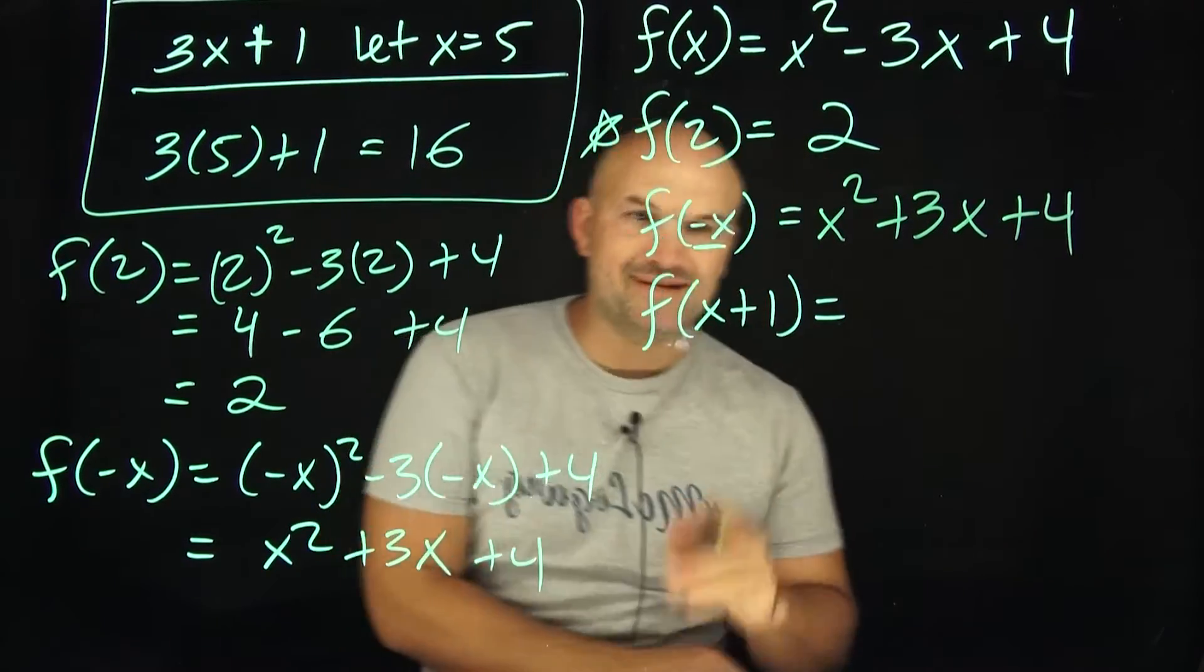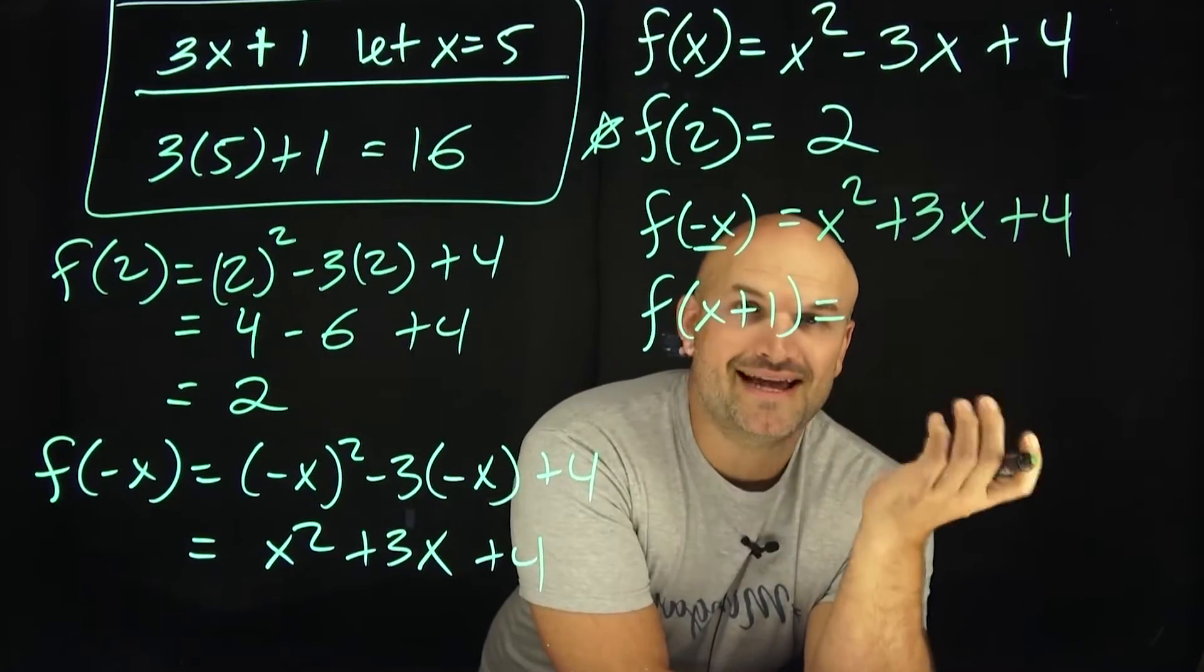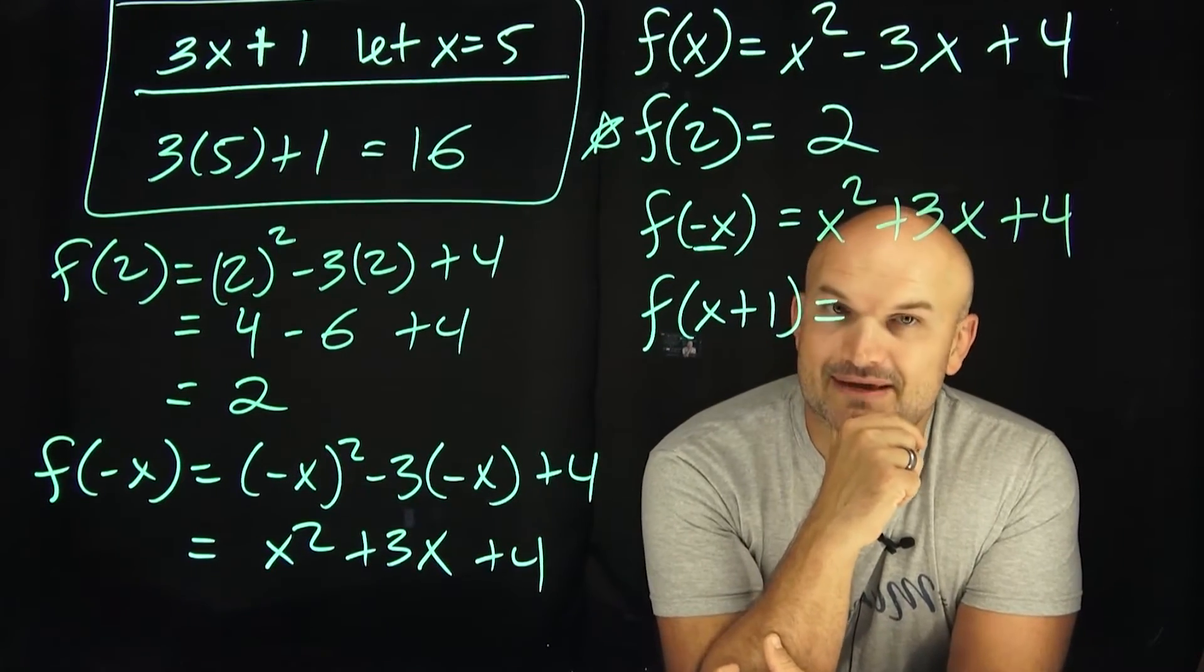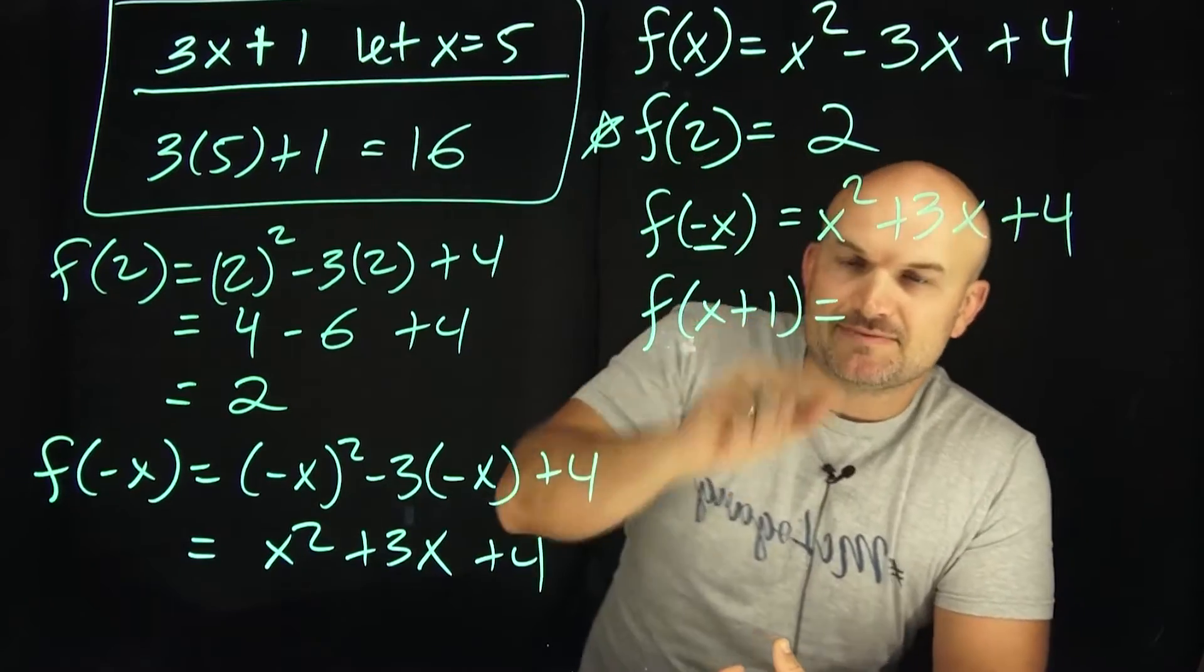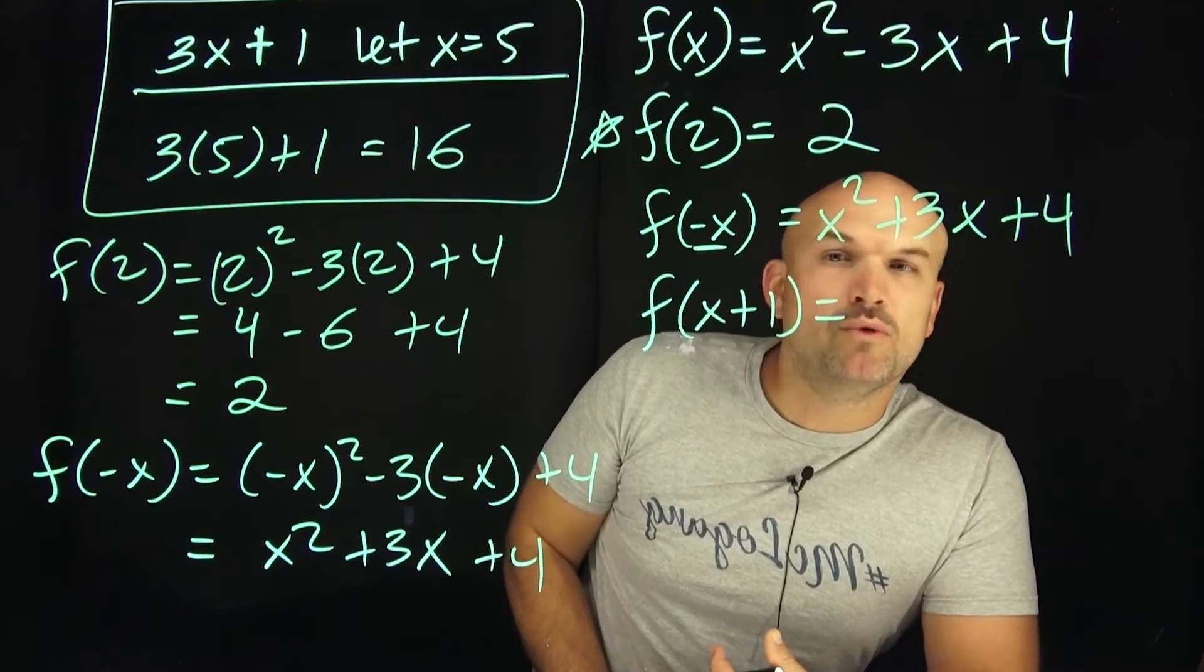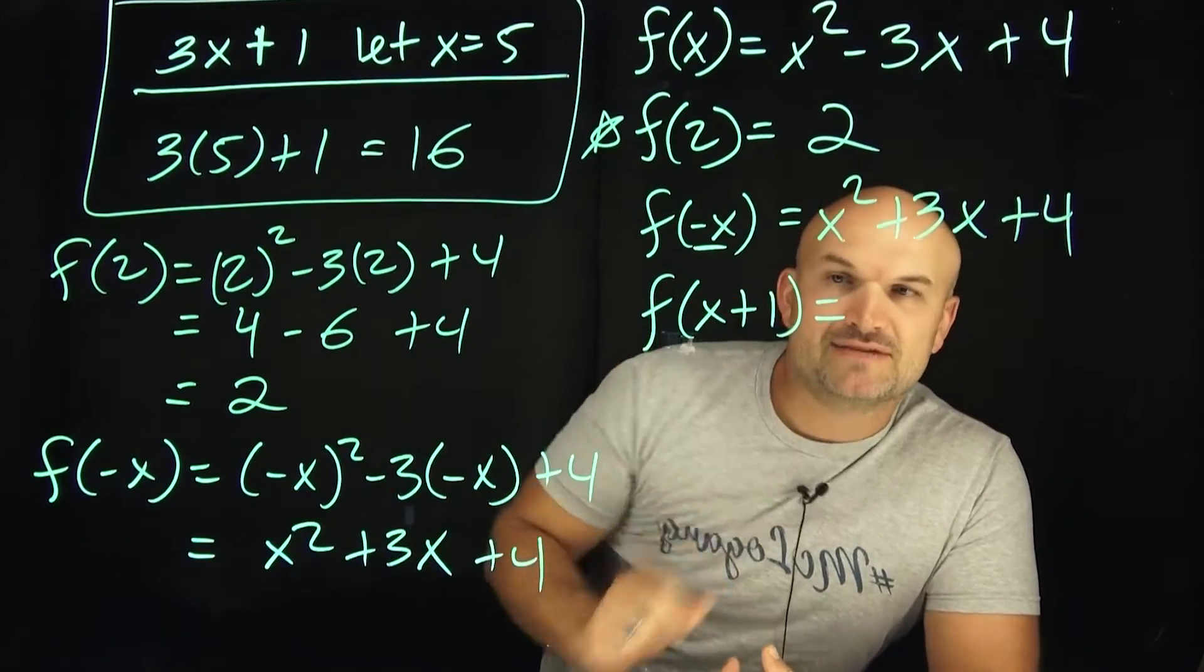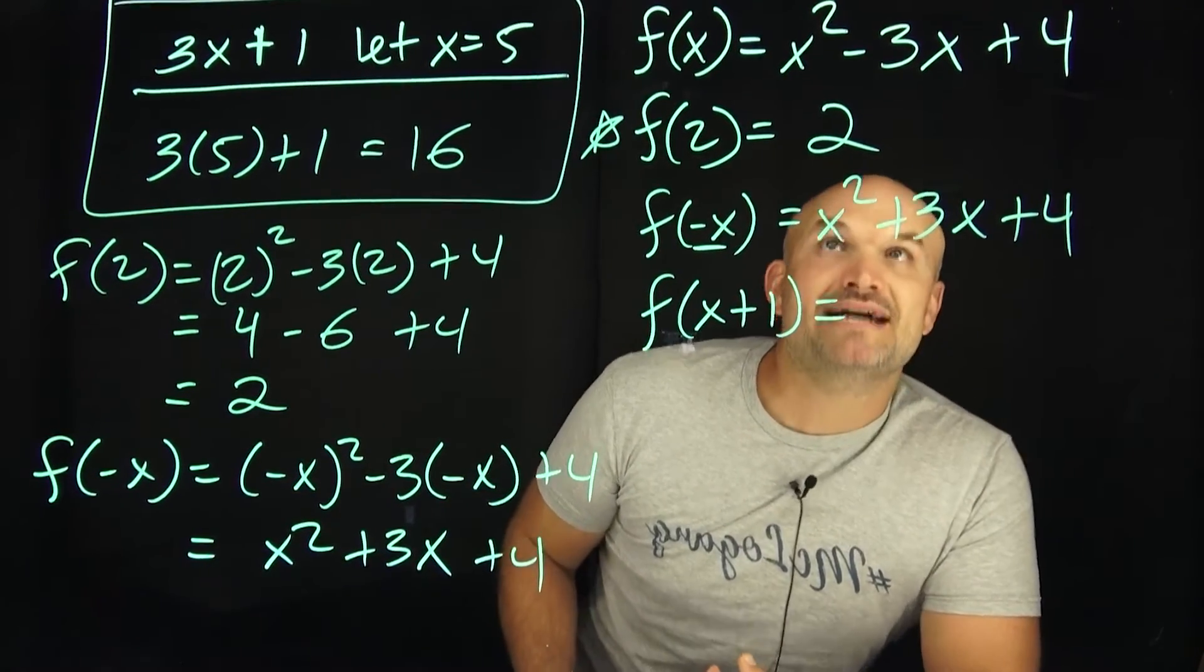So what about when we have something else? Now we have an x plus a 1. So it's kind of like a combination here of a number and a variable. Well, ladies and gentlemen, the exact same thing. Just plug it in. You're going to replace x with an x plus 1. Now here, though, we need to be even more careful with our parentheses. Because negative x squared represents negative x times negative x. Well, guess what x plus 1 squared is going to be? x plus 1 times x plus 1.